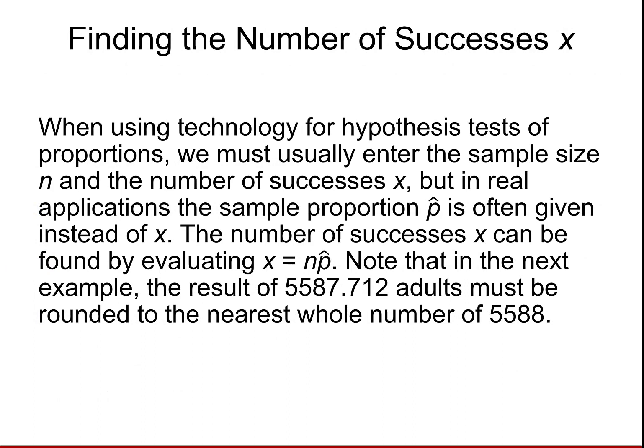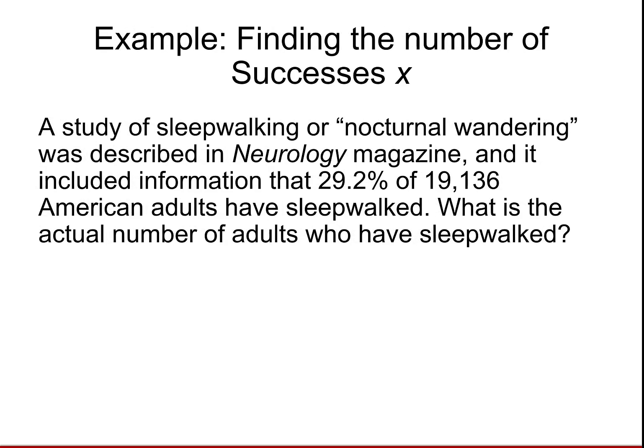How do you find the number of successes if you're only given the point estimate for the proportion? You need to remember the formula where you multiply the sample size times the point estimate in order to get the number of successes. We're going to do an example to demonstrate that.